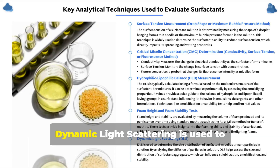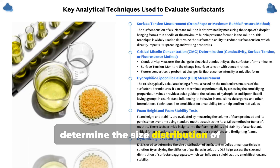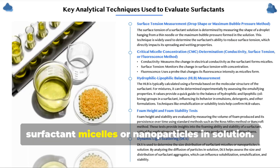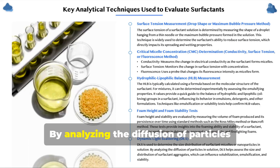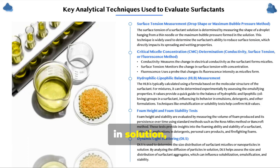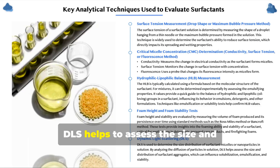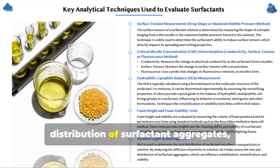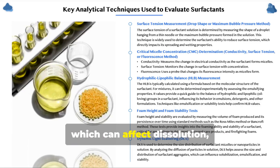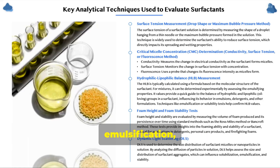Dynamic light scattering (DLS) is used to determine the size distribution of surfactant micelles or nanoparticles in solution. By analyzing the diffusion of particles in solution, DLS helps to assess the size and distribution of surfactant aggregates, which can affect dissolution, emulsification, and stability.